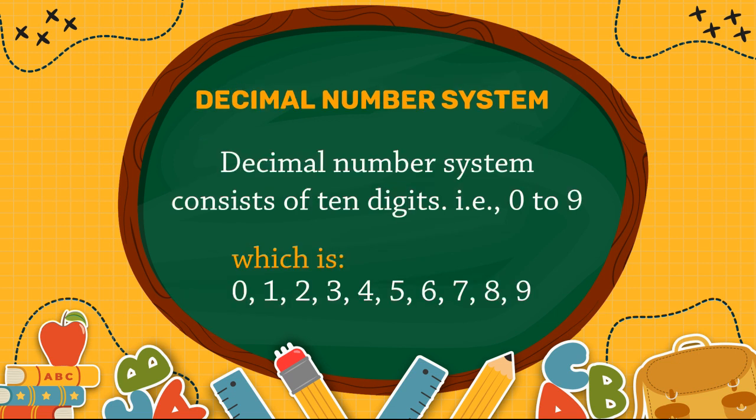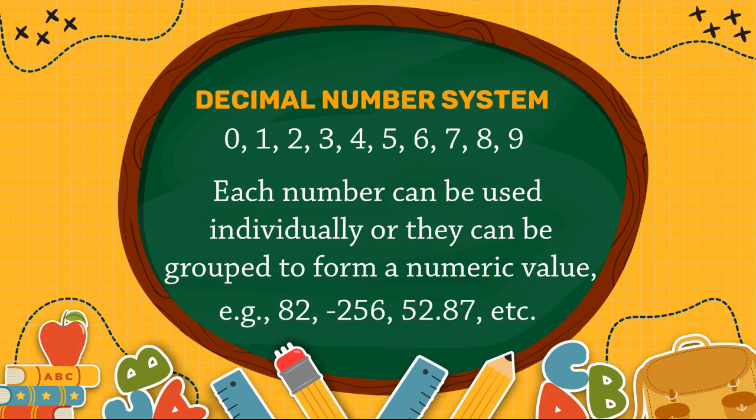Decimal number system. The decimal number system consists of 10 digits, that is 0 to 9: 0, 1, 2, 3, 4, 5, 6, 7, 8, and 9. Each number can be used individually or they can be grouped to form a numeric value.